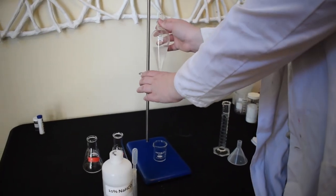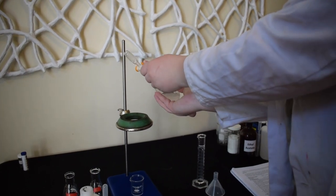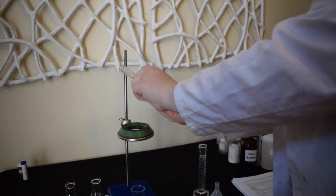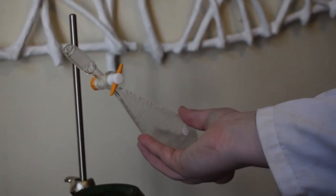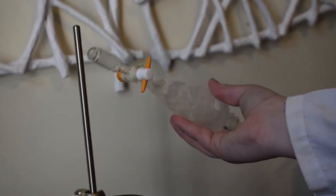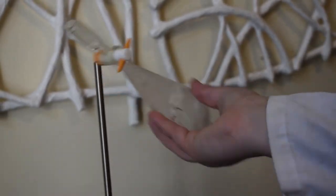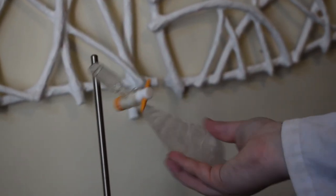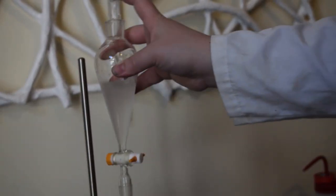Once it's added, we are going to cap the separatory funnel, hold our finger firmly on the stopper, and begin to slowly invert and vent. Each time you vent, there's a little pop, sort of like a soda can opening. You want to keep shaking and venting until there's no noise at all. Remember to close the stopcock after venting before you start shaking again.